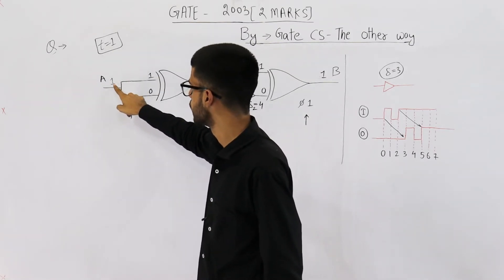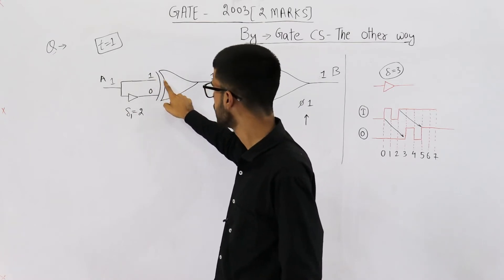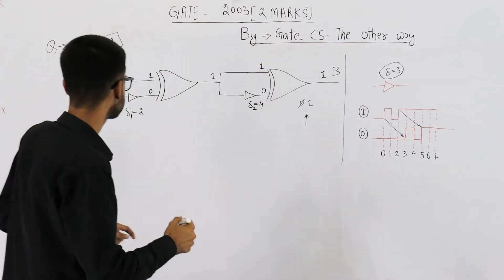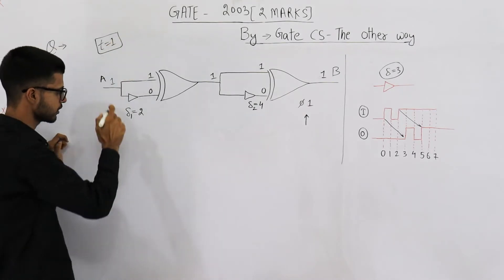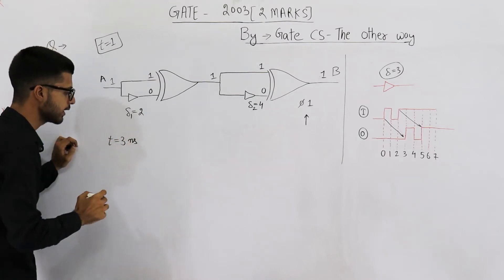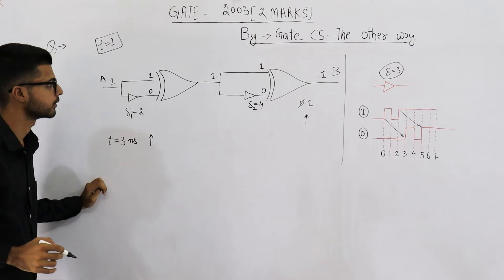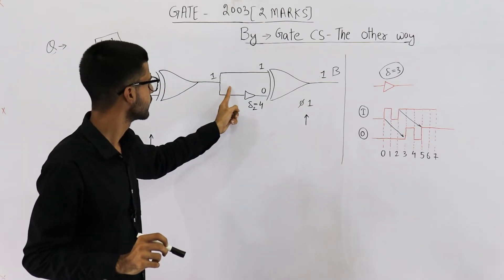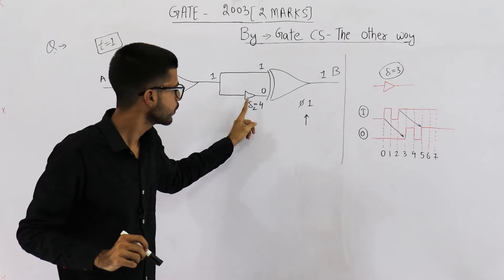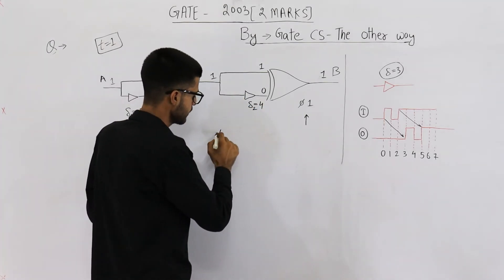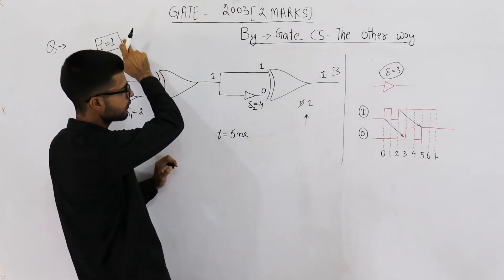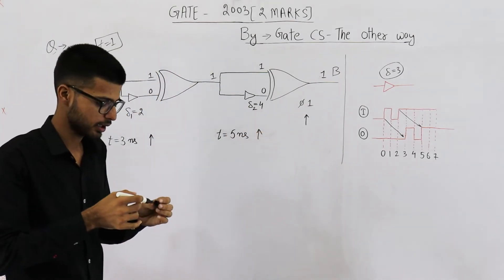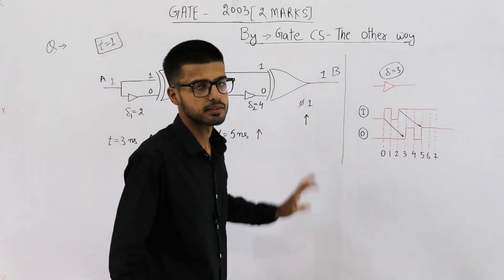Now let's look at the buffers. At time equal to one, the input changed from zero to one. That one reached the first buffer's input immediately, but it will take two nanoseconds to reach its output — so at time equal to three nanoseconds, this buffer will start outputting high. For the second buffer, its delay is four nanoseconds, so one plus four means at time equal to five nanoseconds this buffer will also start outputting one.